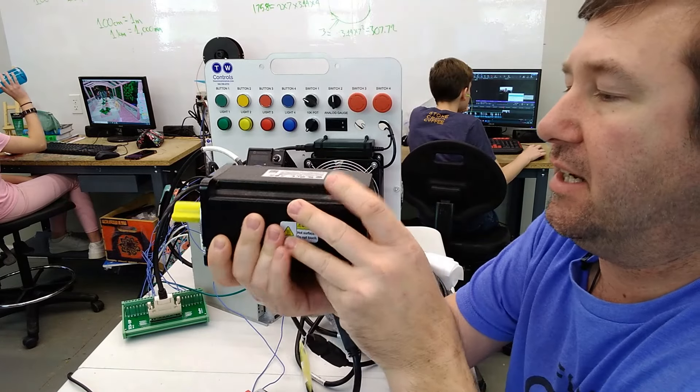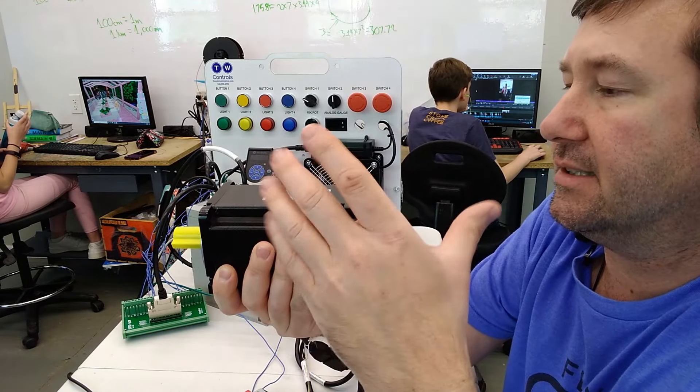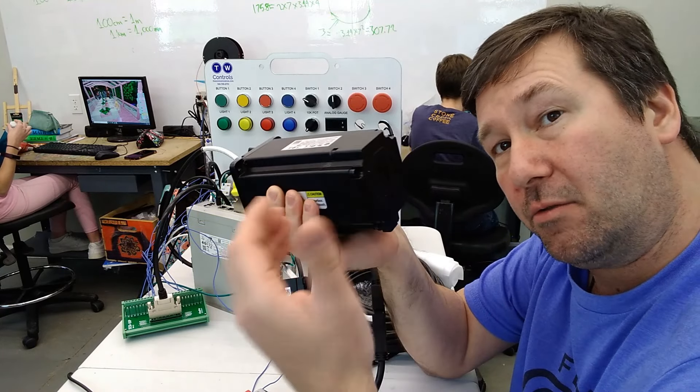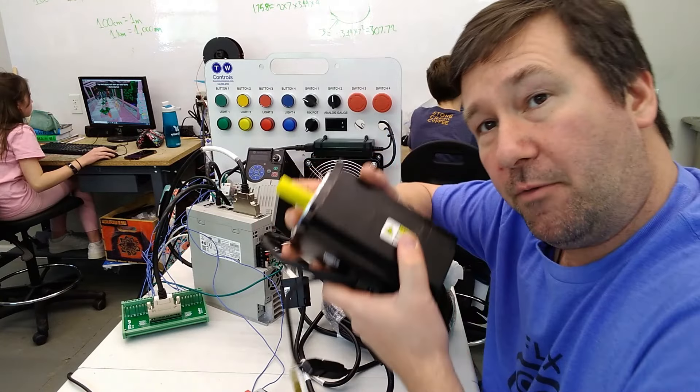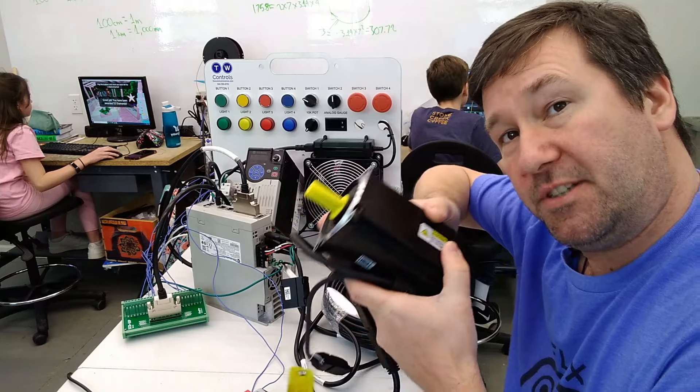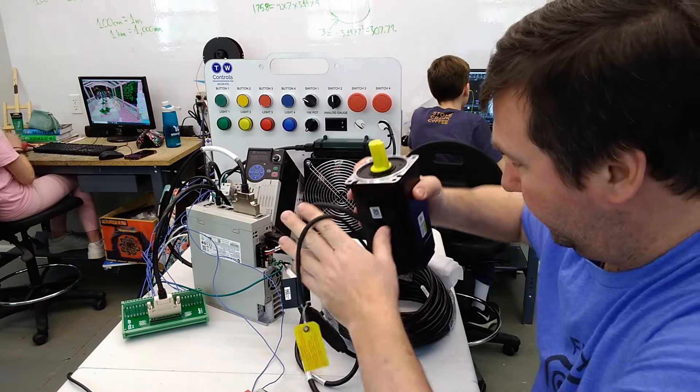The biggest difference between it and a regular motor is that on the back it will have either an encoder or some older ones may have a resolver. They can provide really precise speed, torque, and positioning, and that's the advantage of the servo motor.